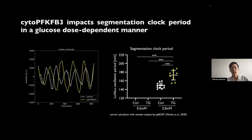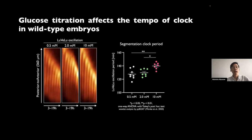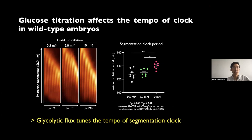So higher glycolysis led to a slower clock. This clock tempo phenotype should be rescuable by culturing them in lower glucose concentration. This data suggests that segmentation clock tempo is responding to glycolytic flux rather than the cyto-PFKB3 protein itself. Indeed, even in wild type embryos, by titrating glucose from 0.5 to 10 millimolar, I was able to slow down the segmentation clock. Combined, these data show that glycolytic flux tunes the tempo of the segmentation clock.